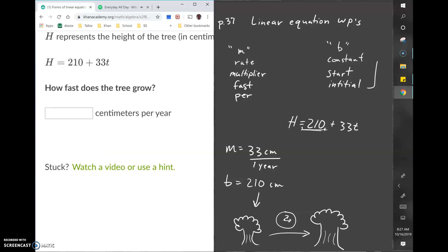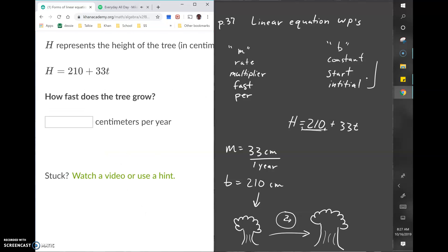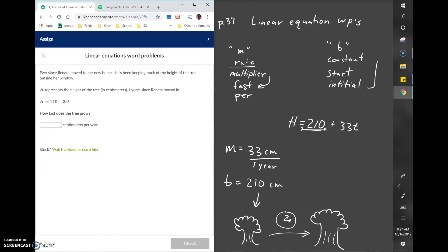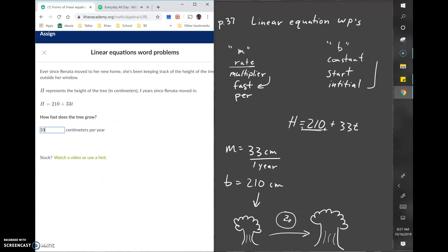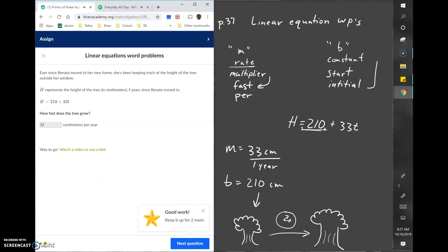The question asks how fast does the tree grow. We know that fast or speed is asking what the rate is. The tree is growing at a rate of 33 centimeters per year. That's how you do linear equation word problems. Good luck.